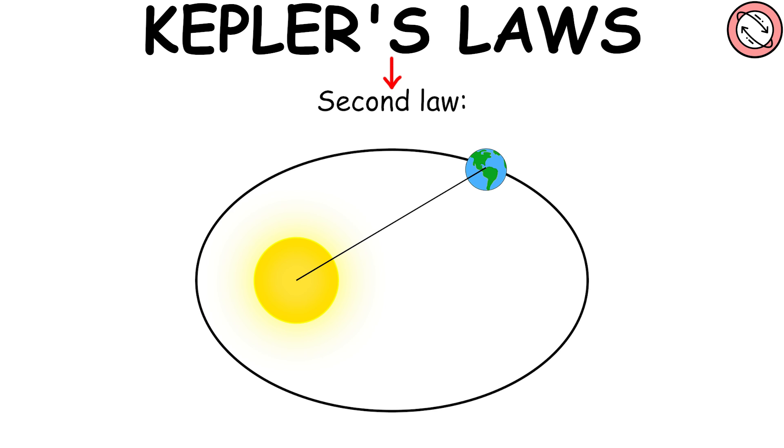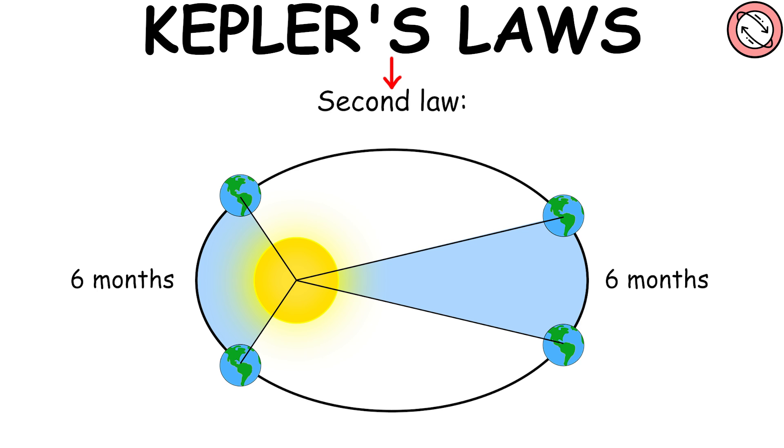The second law states that a line connecting a planet to the sun covers an equal area in equal periods of time. If you measure the area created by drawing a line from the Earth to the sun and track its movement over a six-month period, the area will be the same regardless of where the Earth is in its orbit when the measurements begin.